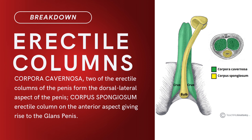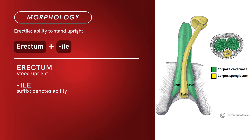Compound term: erectile columns. Brief definition: corpora cavernosa — two of the erectile columns of the penis forming the dorsolateral aspect of the penis. Corpus spongiosum is the erectile column on the anterior aspect, giving rise to the glans penis. Term morphology — erectile means 'ability to stand upright.' Compound of erectum and the suffix -ile, denoting ability. Erectum means 'stood upright.' There you have it: compound term, erectile columns.